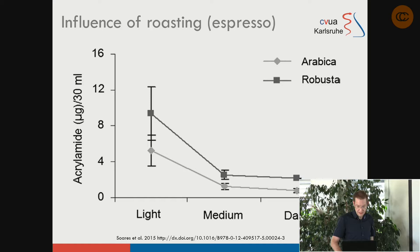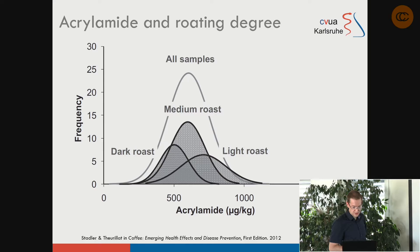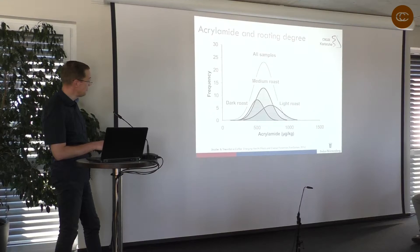This finding was replicated by many other studies, all finding that light-roasted coffee has higher acrylamide levels than medium or dark roasted coffee. A Nestlé study showing large sample distributions confirms that light-roasted beans have an acrylamide profile between 500 and 1000 micrograms per kilogram, while the dark roasted distribution ranges from 200 to 600 micrograms per kilogram.